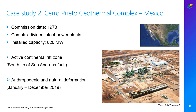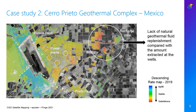The second example is at the Cerro Prieto geothermal complex in Mexico. Over the year 2019, we noticed a complicated deformation pattern caused by natural tectonics, as it is located at the southern tip of the San Andreas fault, and also deformation caused by geothermal activity. As you can see on this velocity map, InSAR can be useful to discriminate between different causes of deformation. Another interesting thing to notice is the subsidence that occurs at the recharge zone, where uplift should normally be expected. This subsidence correlates with the known lack of natural replenishment.